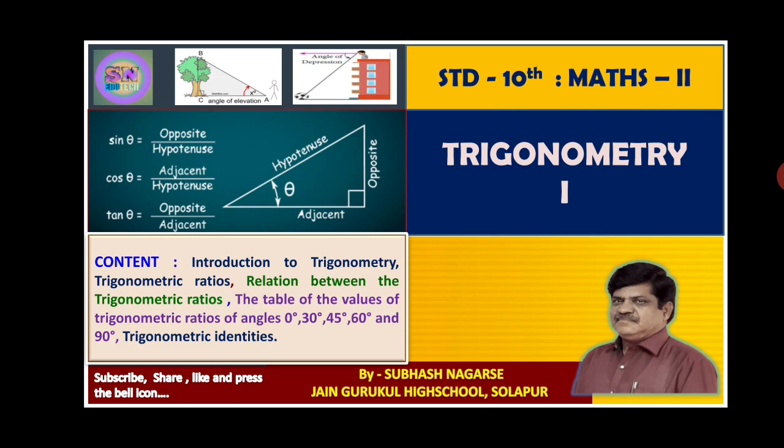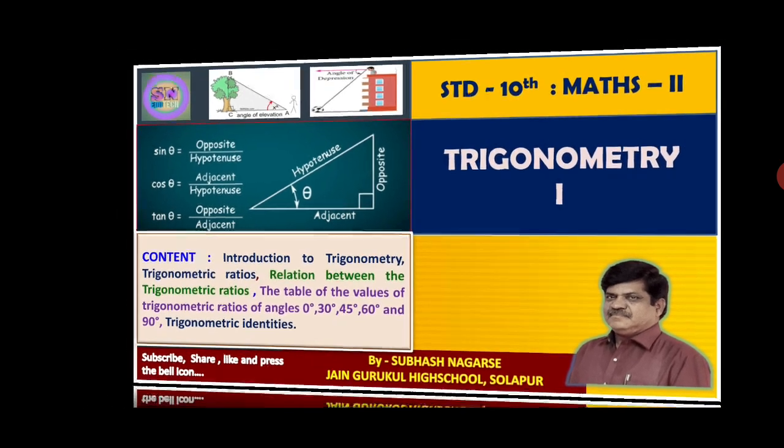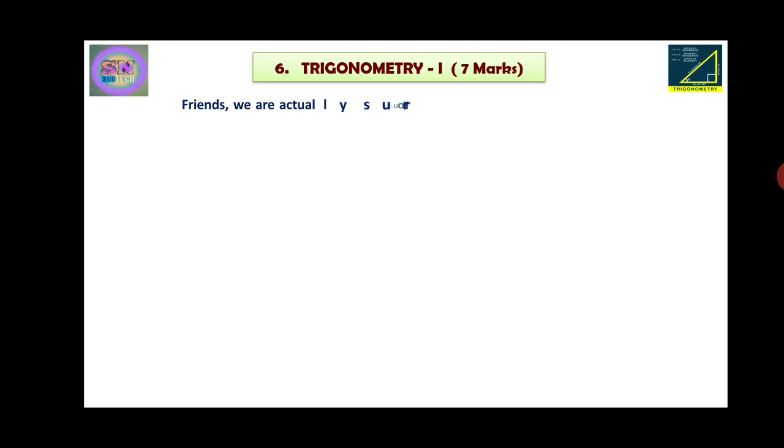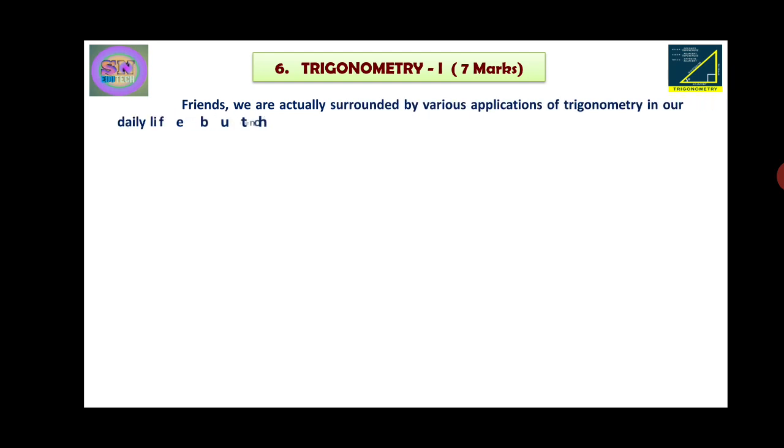In today's session we are going to discuss the introduction to trigonometry, trigonometric ratios, relation between the trigonometric ratios, the table of values of trigonometric ratios of angles 0°, 30°, 45°, 60°, and 90°, and trigonometric identities.